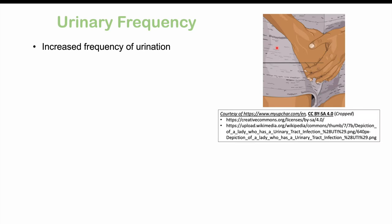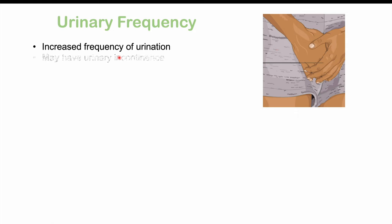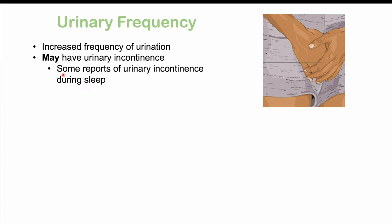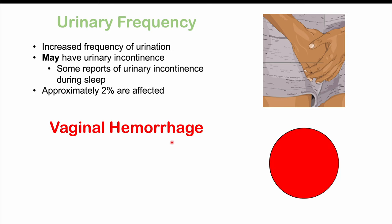Urinary frequency — increased frequency of urination — can also be seen. Patients may also have urinary incontinence, including during sleep. Urinary incontinence is a loss of control of urination, and this approximately affects two percent of patients. There can also be issues with vaginal hemorrhage, meaning vaginal bleeding, occurring in two percent of patients as well.